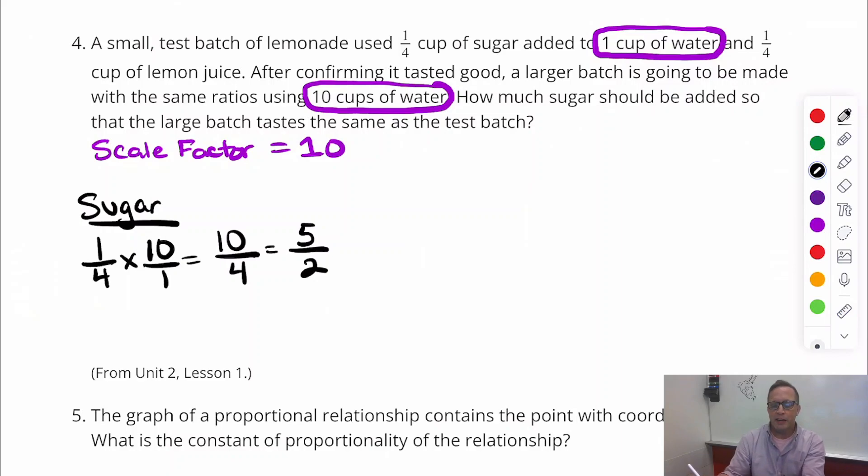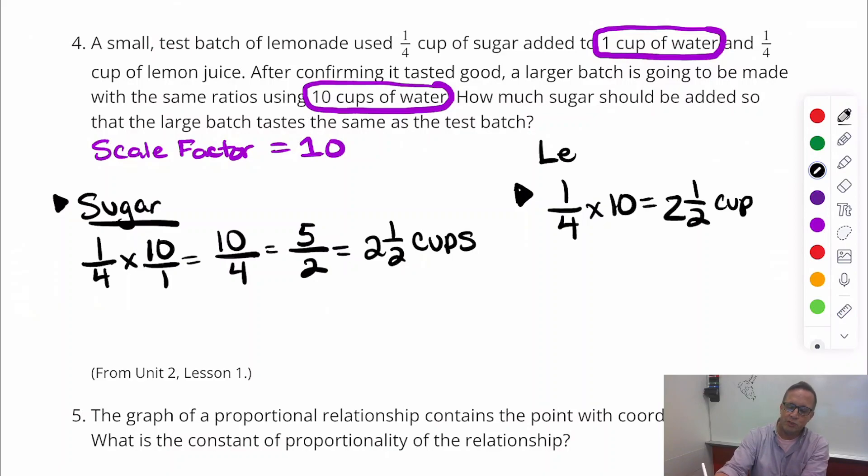And if you tell somebody, hey, I need five-halves cups of sugar, they might give you a weird look. Like, what do you mean five-halves? So you might want to change that into a mixed number, which is two and a half. So two and a half cups of sugar. Alright? There you go. So that's what that is. And then it's the same amount of lemon juice. So lemon juice is one-fourth. I'm not going to do the math again, but one-fourth times ten is also going to be the same thing as doing one-fourth of sugar. So that's going to be two and a half cups of lemon juice. That was easy. That was very simple.